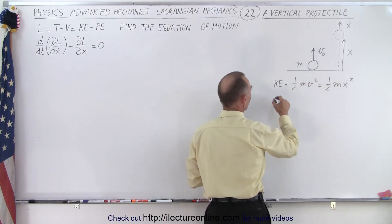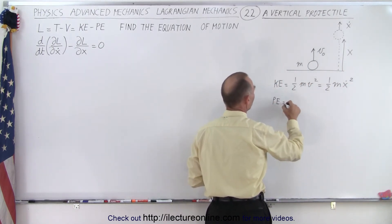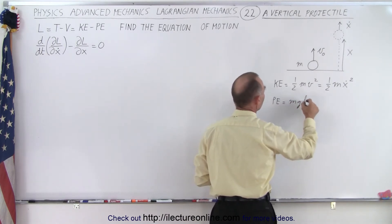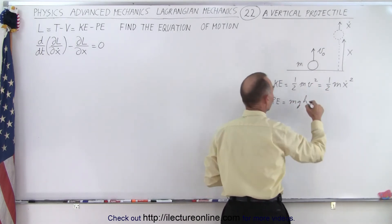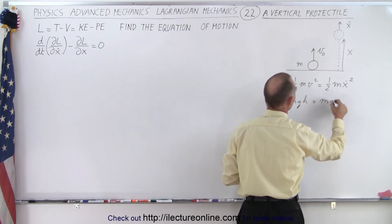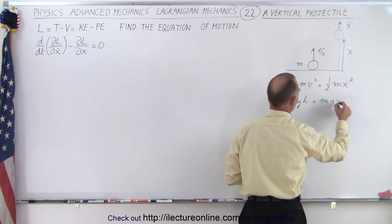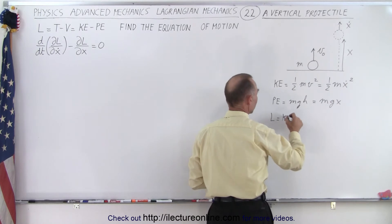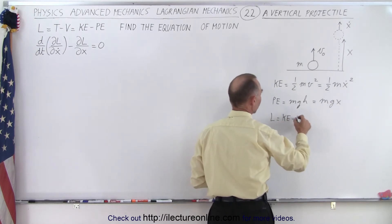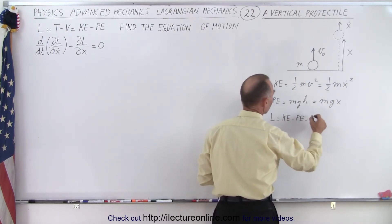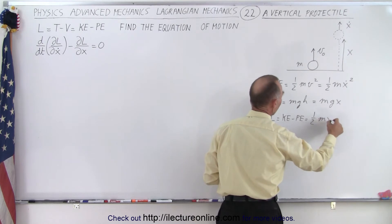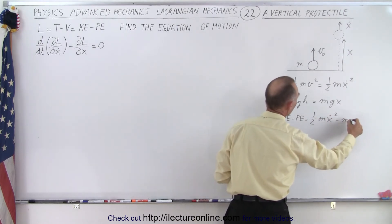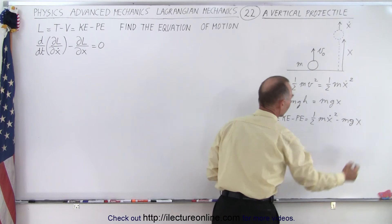And then the potential energy, which is equal to mgh. In this case h will be x, so this will be mgx. And therefore the Lagrangian, which is equal to the kinetic energy minus the potential energy, can then be written as one-half mx-dot squared minus mgx.